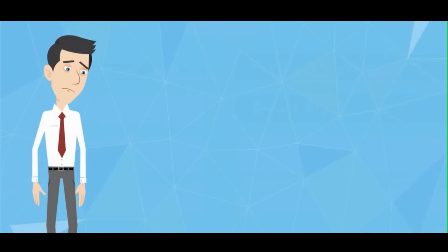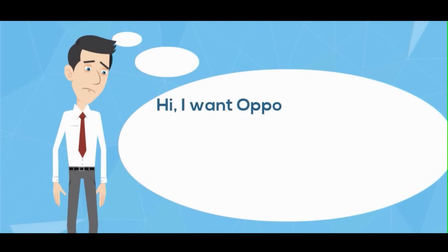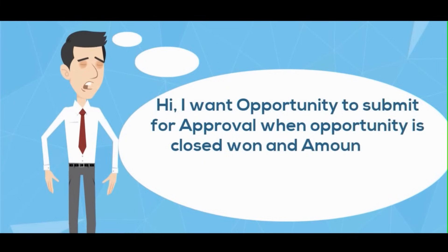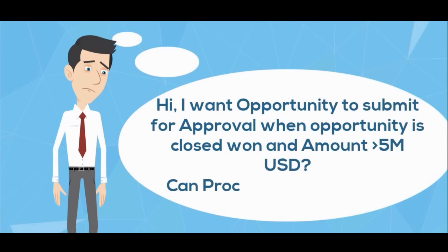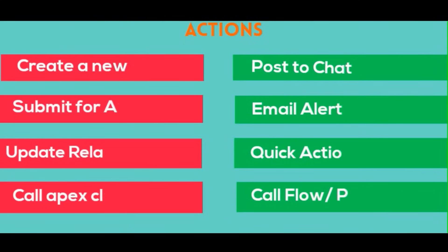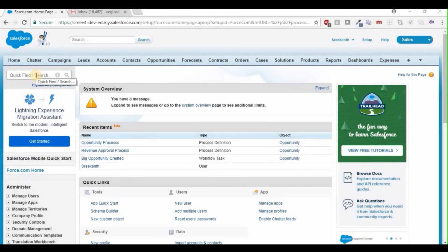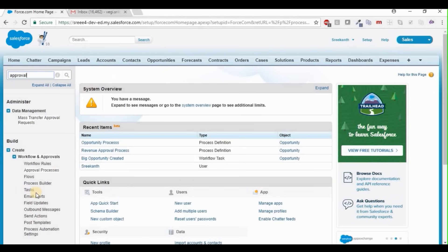Now what? You want to submit for approval when the opportunity is Closed Won and amount greater than five million USD. Can Process Builder help? Of course it can — it's the same criteria, but now you want 'Submit for Approval'. Out of the actions, the Submit for Approval action will help you. Let me show you a demo.